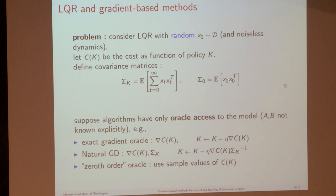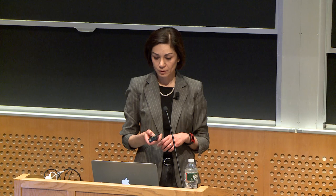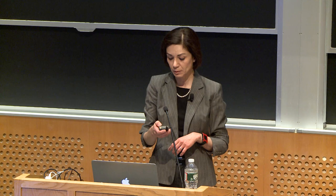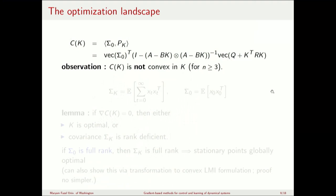Another popular algorithm is natural gradient descent, which takes a weighted version of the gradient weighted by the inverse of the state covariance matrix — essentially gradient descent in a Riemannian manifold or different weighted geometry. We can also have a zeroth-order oracle giving function values of C(K) sampled at different K's. C(K) is a non-convex function of K — that's the main difficulty. We can even write it out explicitly: it's quite messy, with K appearing both inside a Kronecker product inside an inverse and quadratically.